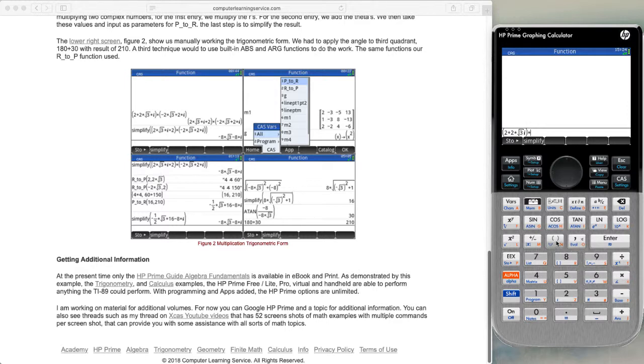negative 2 times square root of 3. Get outside the square root symbol, plus 2 I.